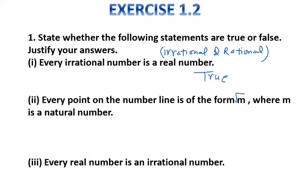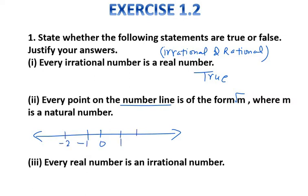The second statement: every point on the number line is of the form √m, where m is a natural number. Now, on a number line we have both positive numbers and negative numbers. However, they specify that m is a natural number only.